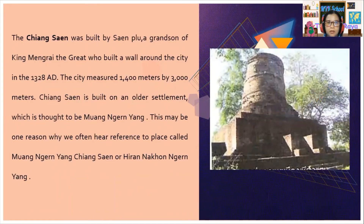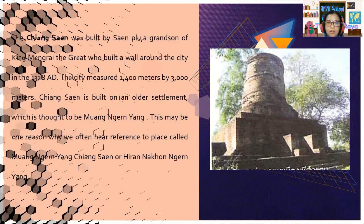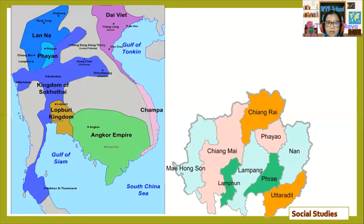So Chiang Saen was built by Sen Flu, a grandson of King Mengrai the Great, who built a wall around the city.